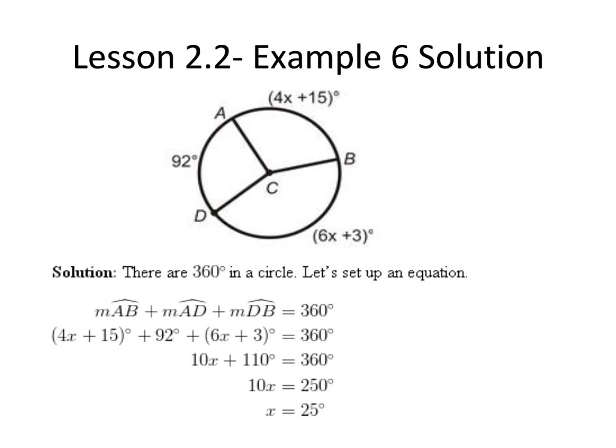Then we can substitute in the given values for each of the arcs into our equation to get 4X plus 15 plus 92 plus 6X plus 3 equals 360 degrees.